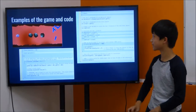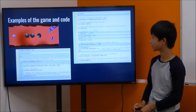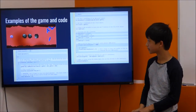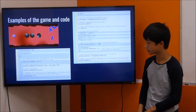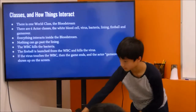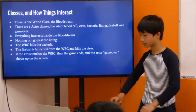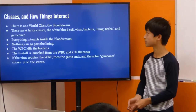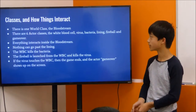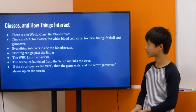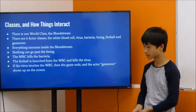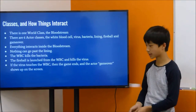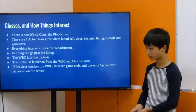Here's some examples of what the game looks like and some of the code. There's one world class, which is the bloodstream, and there's six actor classes: the white blood cell, virus, bacteria, lining, fireball, and game over.